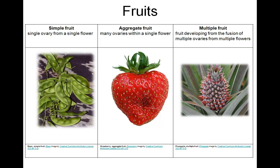Multiple fruits develop when the carpels from many different flowers born on a common receptacle fuse together. Pineapple is an example of a multiple fruit — the woody tissue in the center of the pineapple that we cut away is the common receptacle.